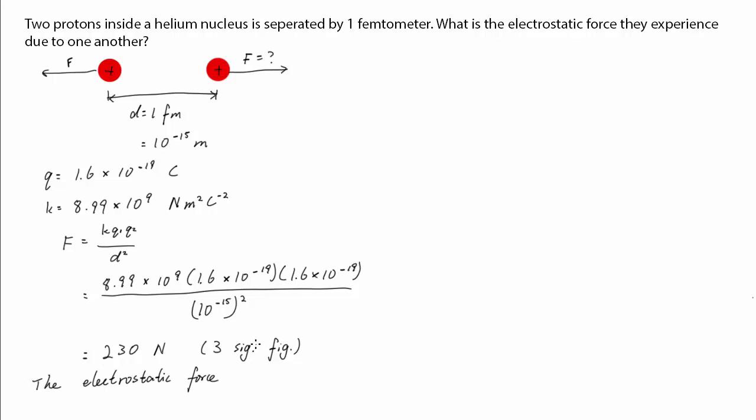The other proton experiences the same amount of force, except in the opposite direction. 230 newtons is the force required to lift a small child. Considering how small the nucleus of an atom is, this force seems way too large.